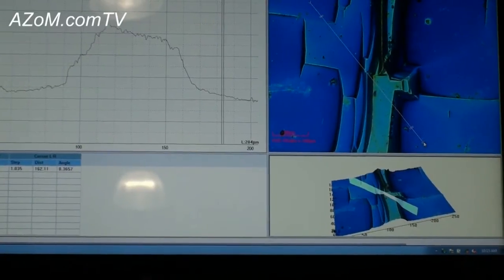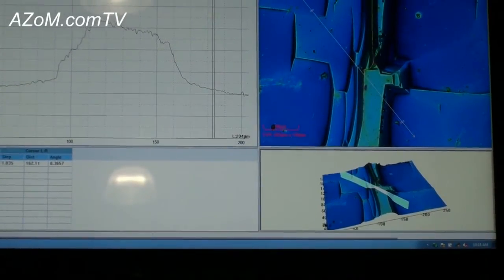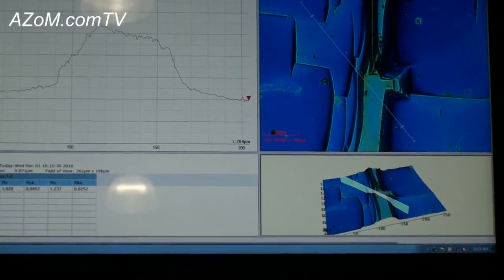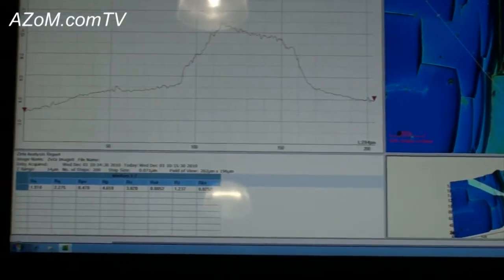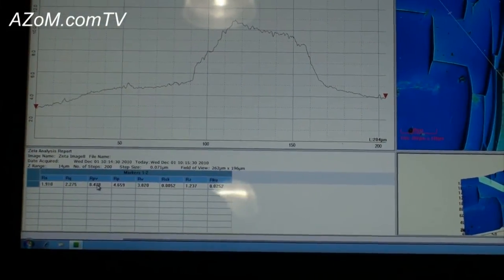If this were a sample and I wanted to measure roughness, it's as simple as coming up and clicking roughness. Now I actually have roughness values such as your average roughness, the RMS, peak to valley.